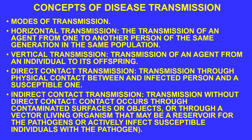There are different types of modes of transmission. Horizontal transmission is the transmission of an agent from one person to another of the same generation in the same population — for example, a group of fourth graders. Vertical transmission differs: this is transmission of an agent from an individual to its offspring. Commonly, if a mother is exposed to a particular pathogen, it can affect the infant in utero.